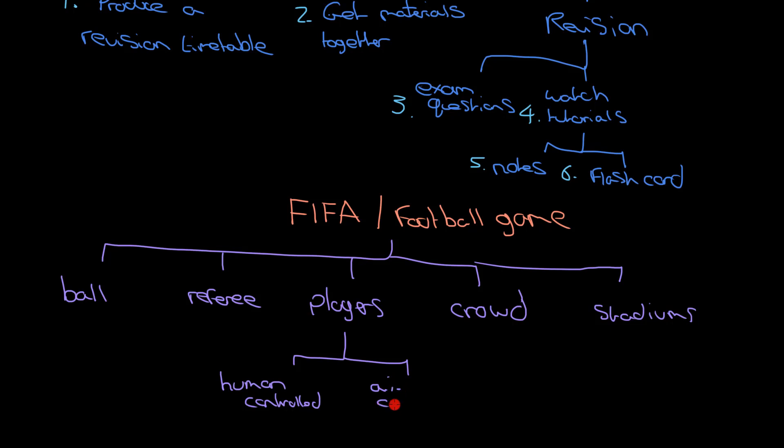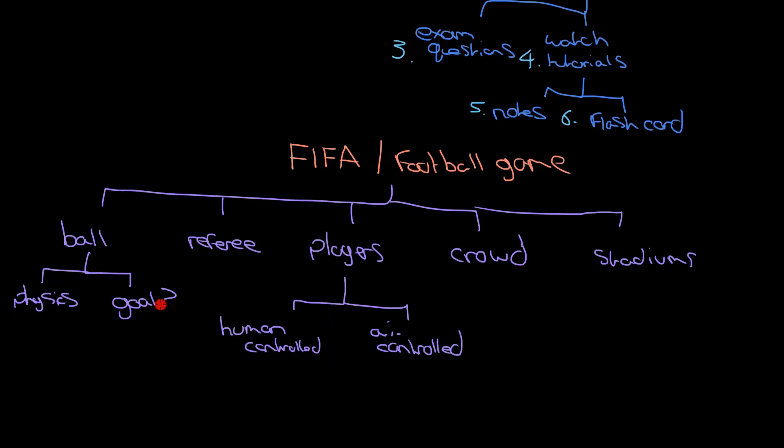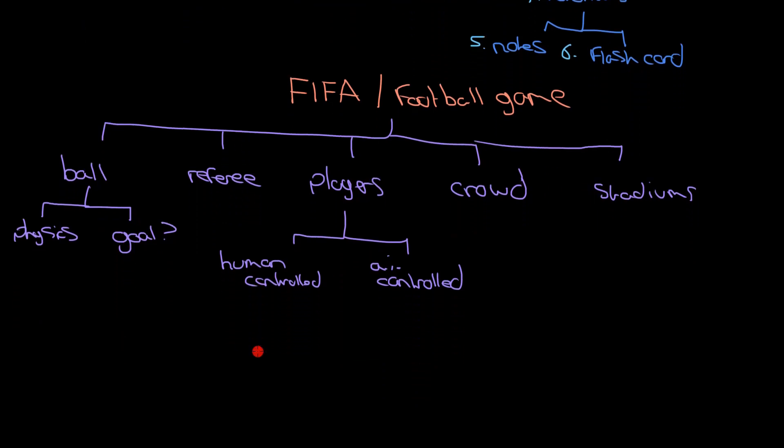And then we've got AI controlled—the ones controlled by the computer. How are we going to program that differently? With the ball, it needs to have some sort of ball physics so it can be kicked around, but then the game needs to recognize if the ball's in the goal or not to see if we've scored.